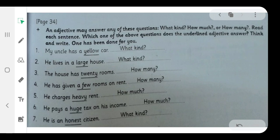Number one. My uncle has a yellow car. Yellow. Answer: What kind? Number two. He lives in a large house. Large. Answer: What kind?